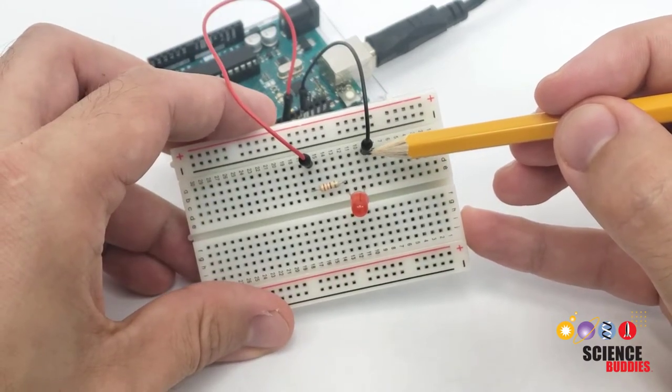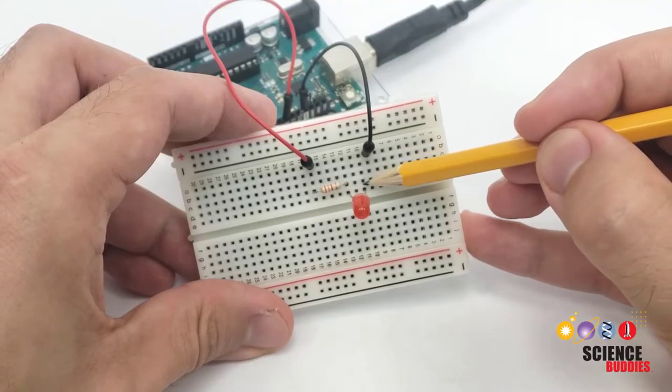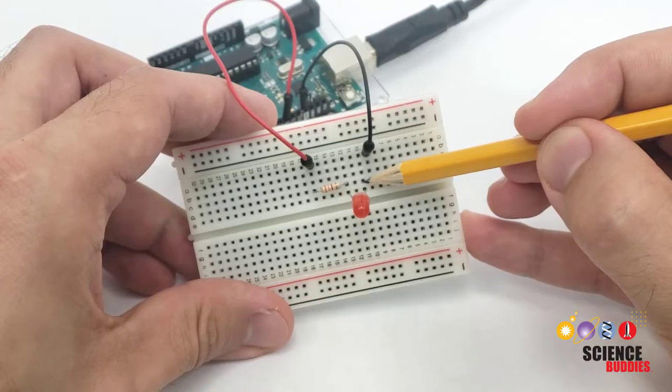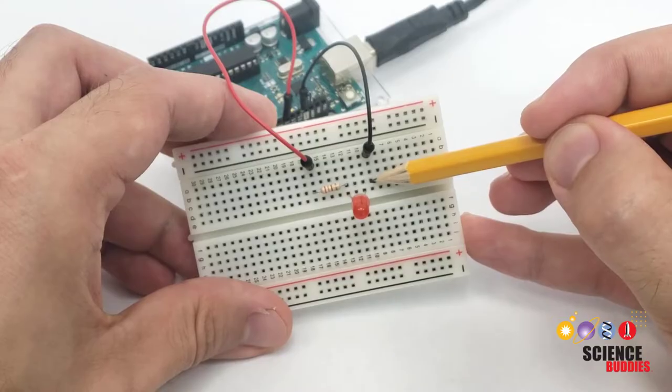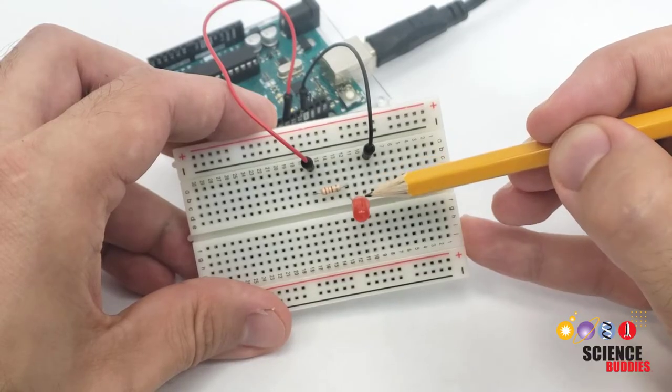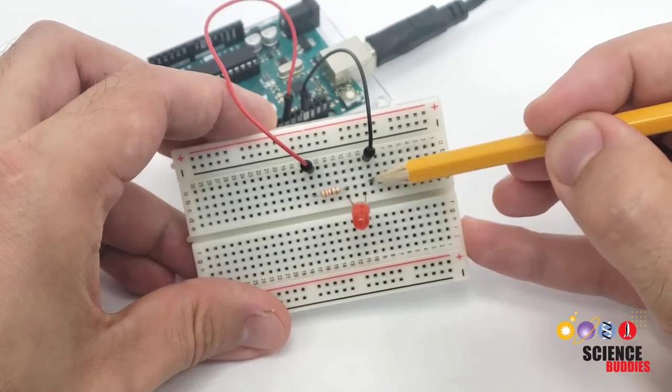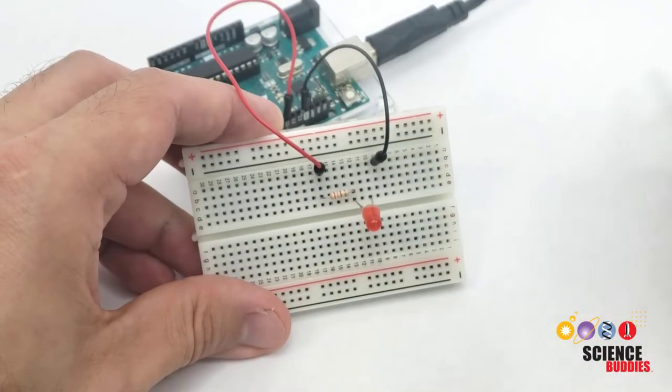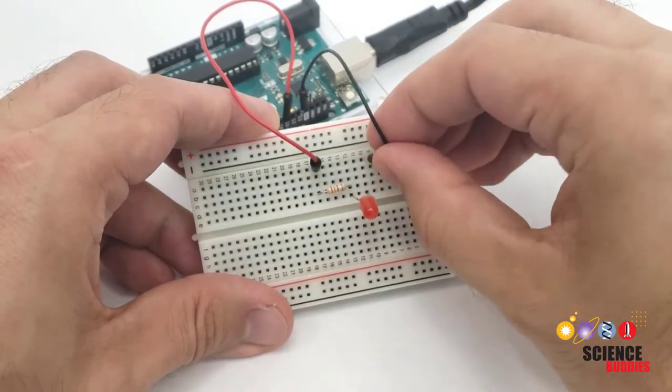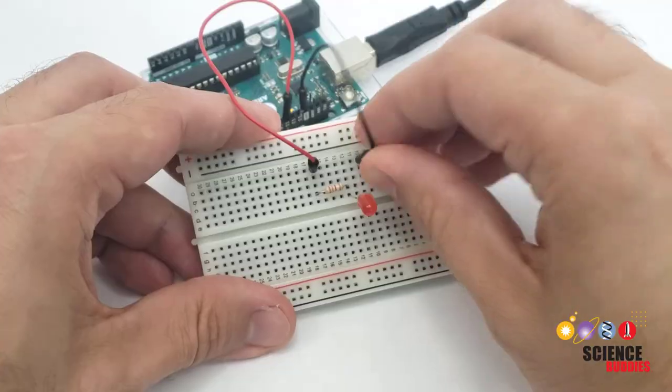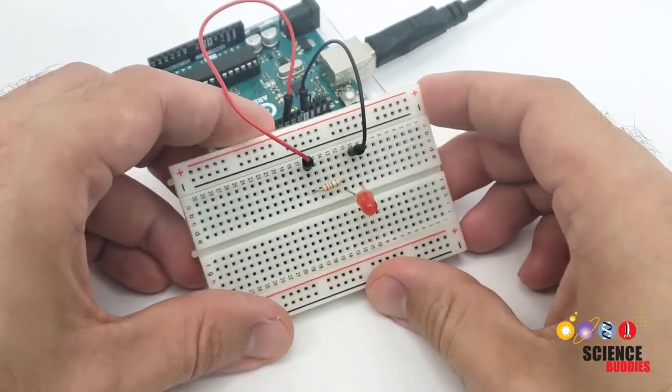You can see here that my black wire is not in the same row as this leg of the LED. Since this row is not connected to this row, I have an open circuit here. There's no closed path for current to flow from the LED to the black wire. To close that circuit, I need to move my black wire down so it's in the same row as the leg of the LED.